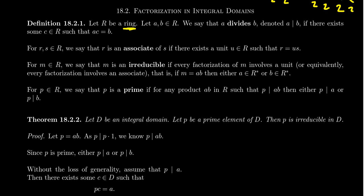There are some important terms we have to talk about before we can define what unique factorization even means. Imagine we have a ring with unity, call it R, and take two elements A and B inside that ring. What does it mean for A to divide B? We say that A divides B if there's some other element C inside the ring such that AC equals B. So A divides B if A is a factor or divisor of B. We use the symbol — a vertical line — A divides B, that's how we read it.